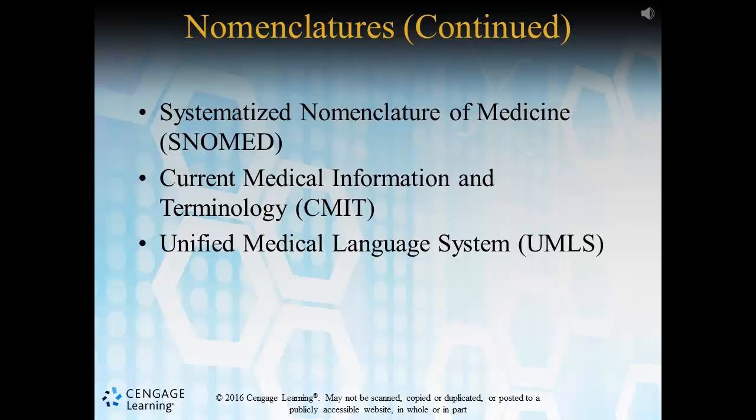Lastly, the Unified Medical Language System, or UMLS, is a set of software developed by the National Library of Medicine that unites health and biomedical vocabulary and standards. A more in-depth version of all of these can be found on page 319 of your course text.